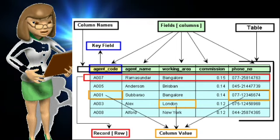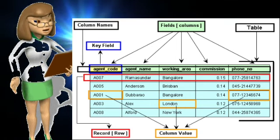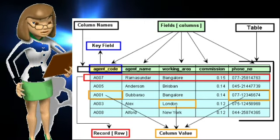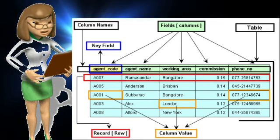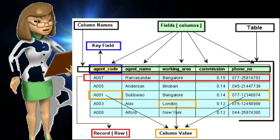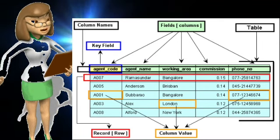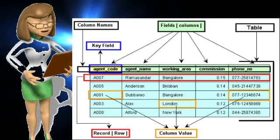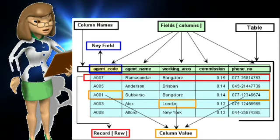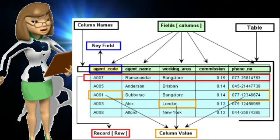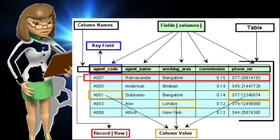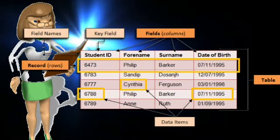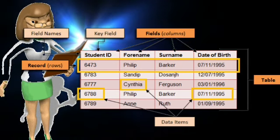The structure of a database is made up of three components: field, record, and field name. In Excel, a record refers to rows and a field refers to columns. A database has three main components — field, record, and field name. Field represents columns and records represent rows.